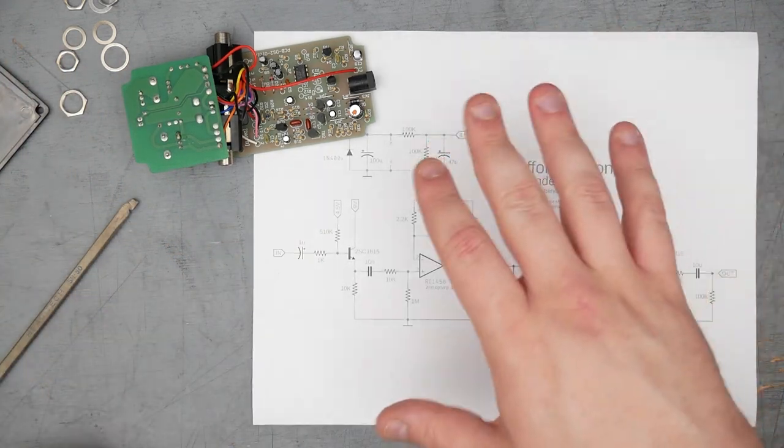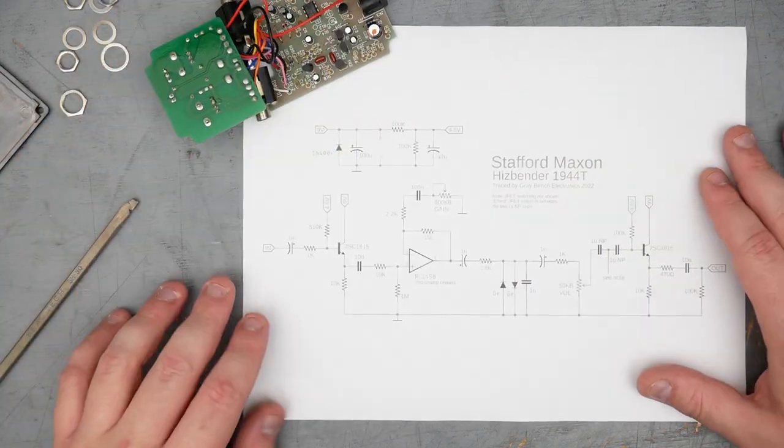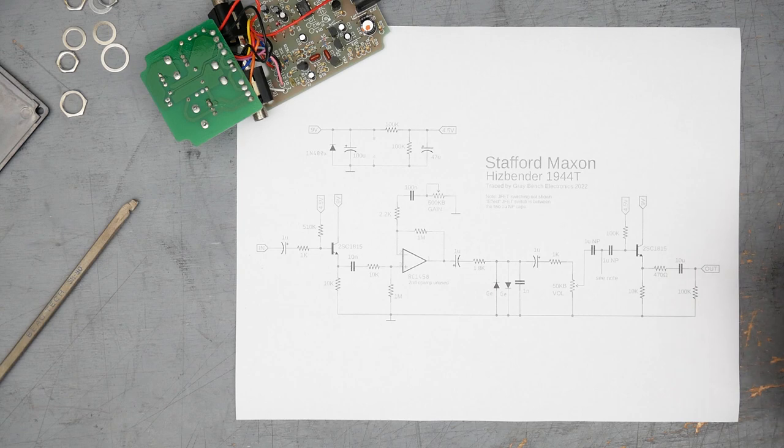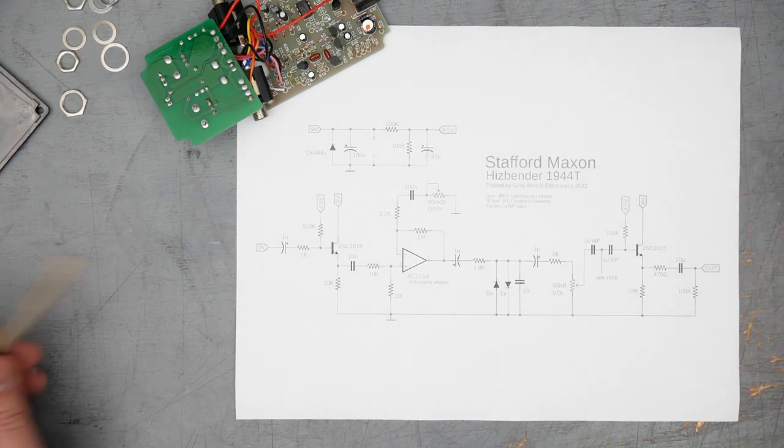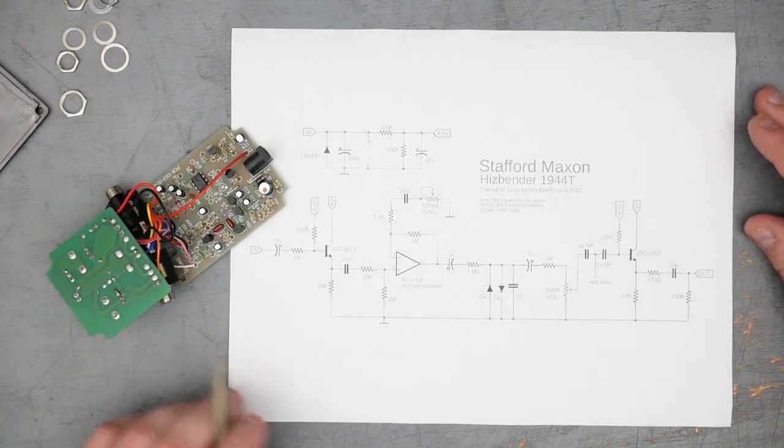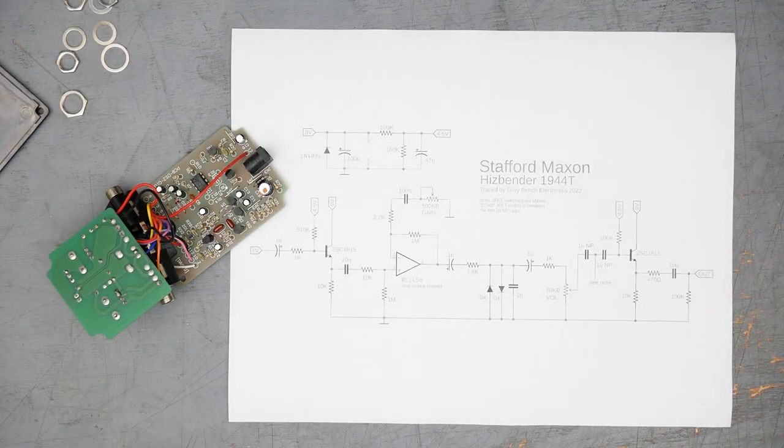Anyway, so I've traced out the pedal and to the surprise of probably no one at this point, it is not a tone bender, not even close. It is basically a distortion plus with input and output buffers. A little bit disappointing. Not a whole lot of innovation going on here.